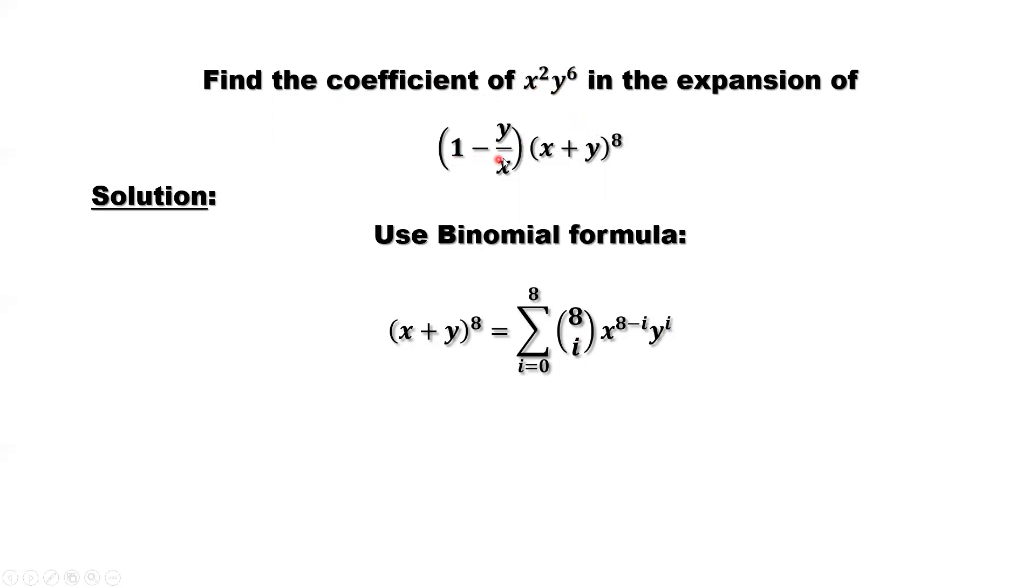So here is something special: 1 times this, then minus y/x times this. So we have two terms inside that we are interested in. One term is this. When i equals 6, that's y⁶. 8 minus i minus 6 is 2, so x². So this term, we are interested in.